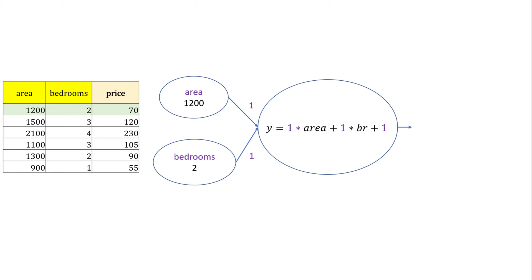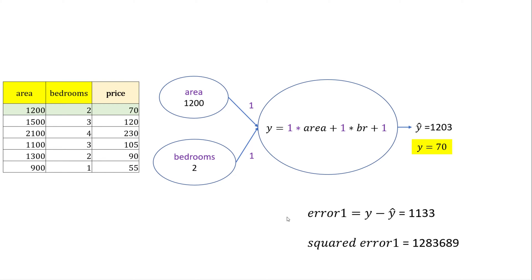When training your network, you feed the first sample into the equation. You initialize your weights — say w1 and w2 — to 1, then feed the first sample to calculate the predicted price, called y-hat. You compare y-hat with the actual price to find the error, which is the difference between the predicted and actual values. Then you square the error.